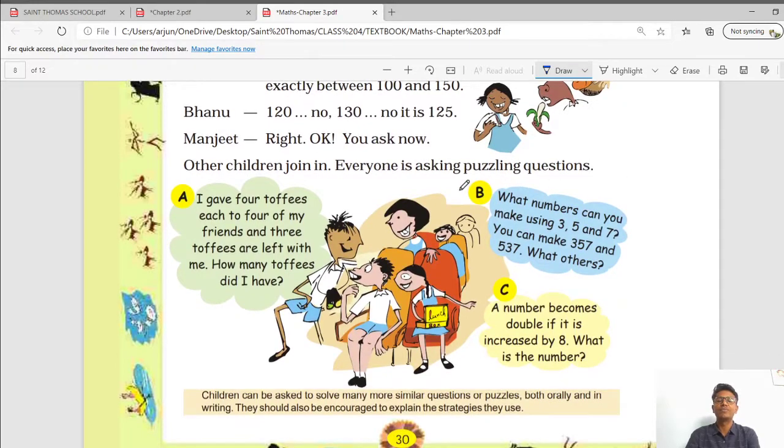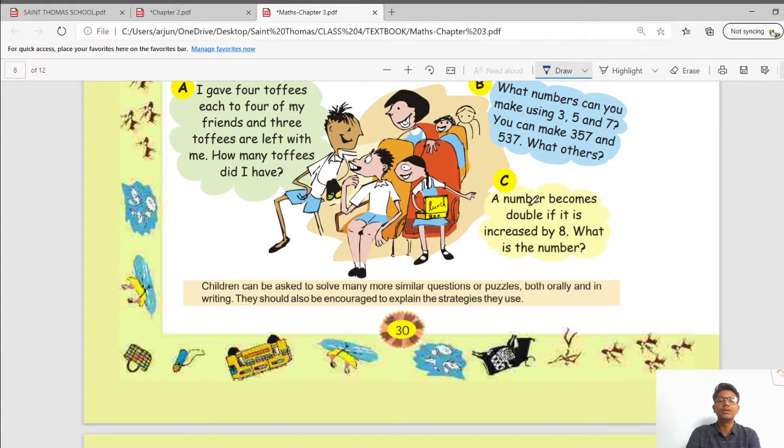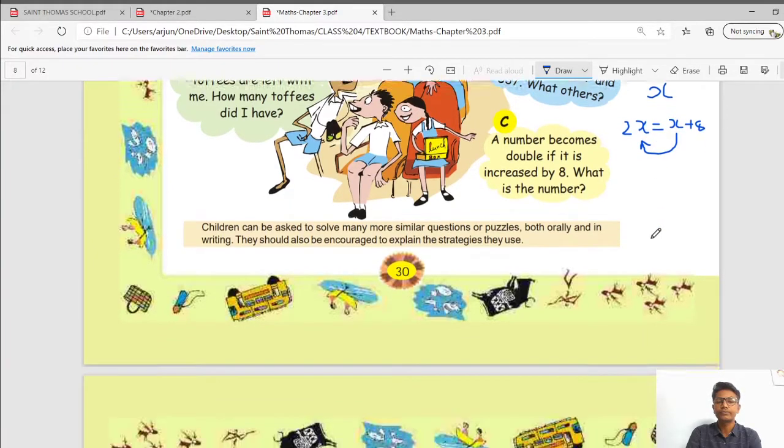Moving further. These puzzles questions are very interesting and can be asked in the exam also. We have seen in detail all the puzzles. For example, this C1. A number becomes double if it is increased by 8. For example, we assume that number is x. Then it becomes double if it is increased by 8. The equation form will be like this. This x will go this side and sign will change. x equals to 8. This type of puzzles.